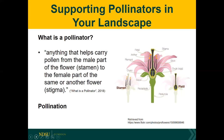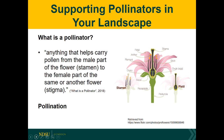To start off, here is a simple diagram of a flower and its parts. You don't necessarily need to know all of them, but it gives you something to reference as I'm talking. Pollinators can be anything that helps carry pollen from the male part of the flower — the stamen — to the female part of the same or another flower — the stigma.